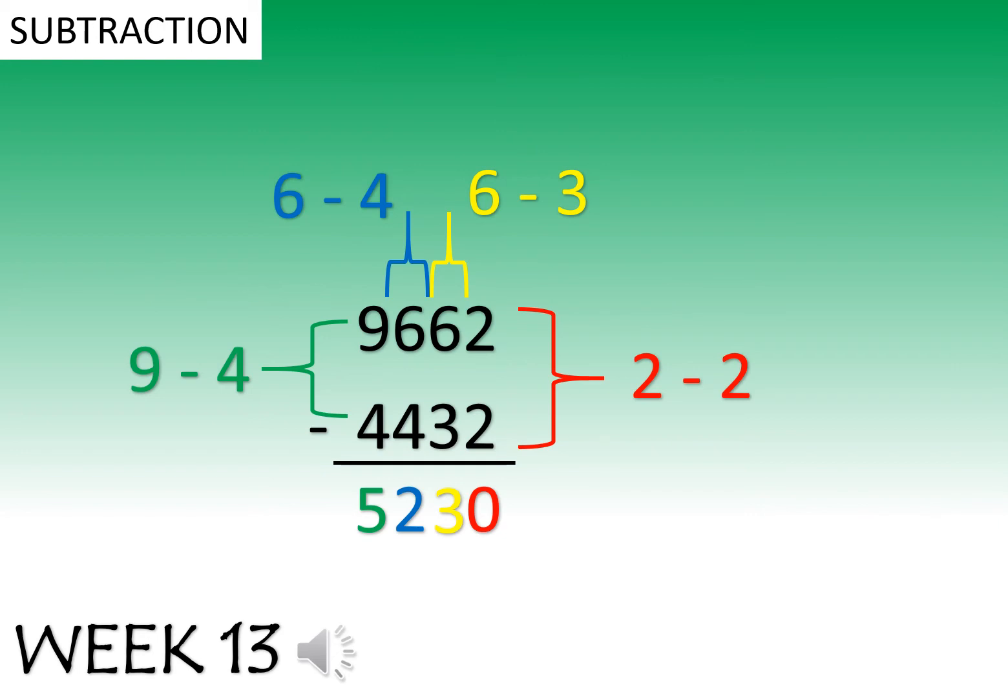Subtraction with 4 digits. Start with the number on your right. 2 take away 2 equals 0. 6 take away 3 equals 3. 6 take away 4 equals 2. And 9 take away 4 equals 5.